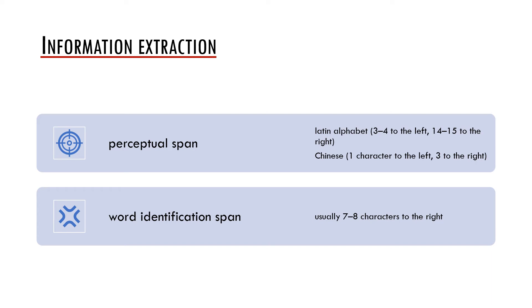In other words, there is a difference between what we can perceive during the fixation and what we can consciously identify. There have been disputes to what extent do we really use the information about the word identification span during reading. However, while using eye tracking we may automatically change certain letters outside the word identification span which are still in the perceptual span. If we do this, the reader will not consciously recognize it but he or she will typically slow down reading, which is a sign that the whole perceptual span is somehow important for reading.